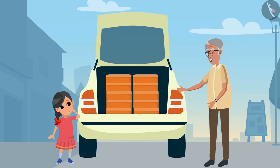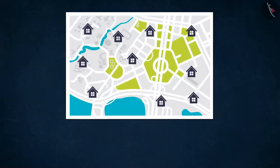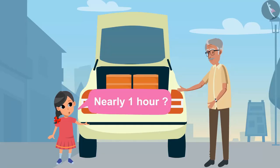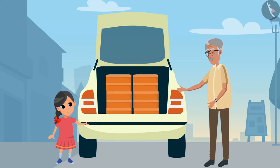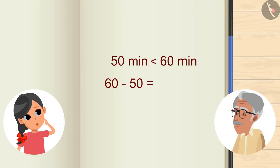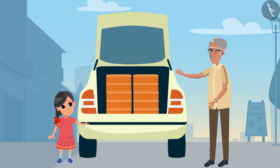Besides this, driving from one house to another will also take time. How much time will it take, Grandpa? All the houses are very close, Goody. It will hardly take 50 minutes. Means nearly 1 hour, Grandpa? You tell me — if there are 60 minutes in an hour, then 50 minutes is how much more or less than it? 50 minutes is less than 60 minutes. On subtracting 50 from 60, we get 10. So it is 10 minutes less than 60, Grandpa.